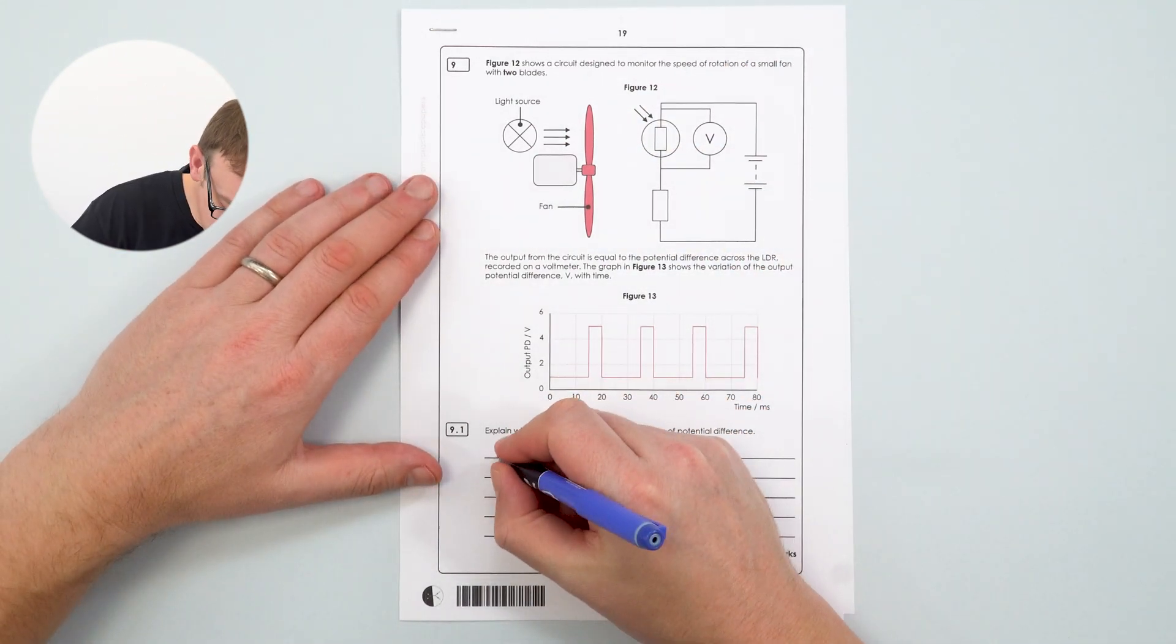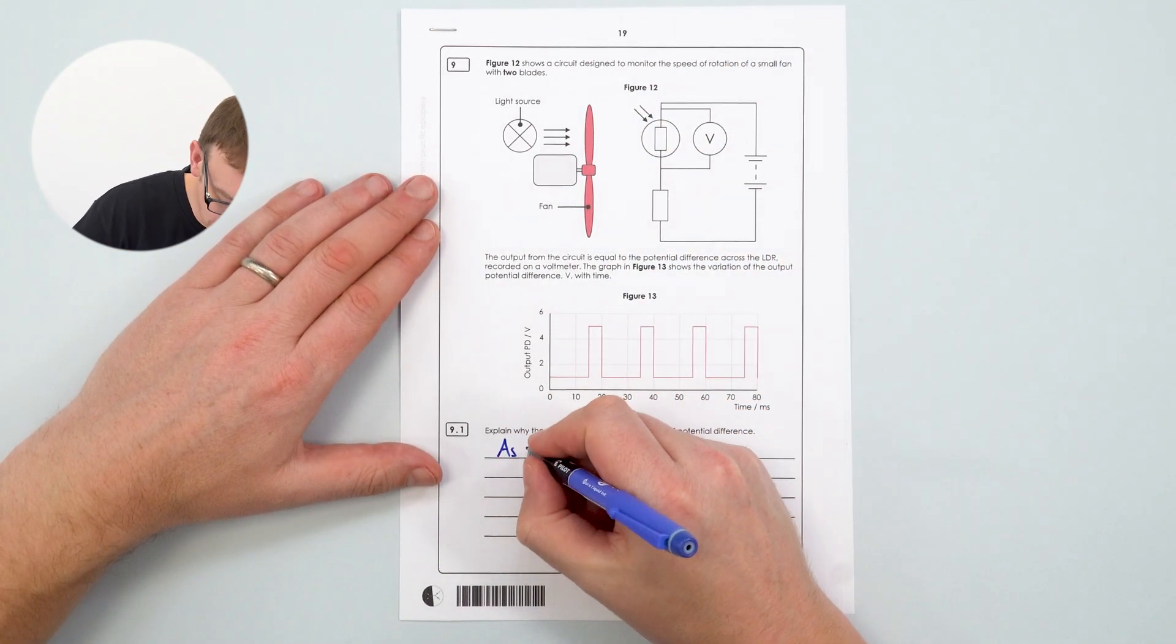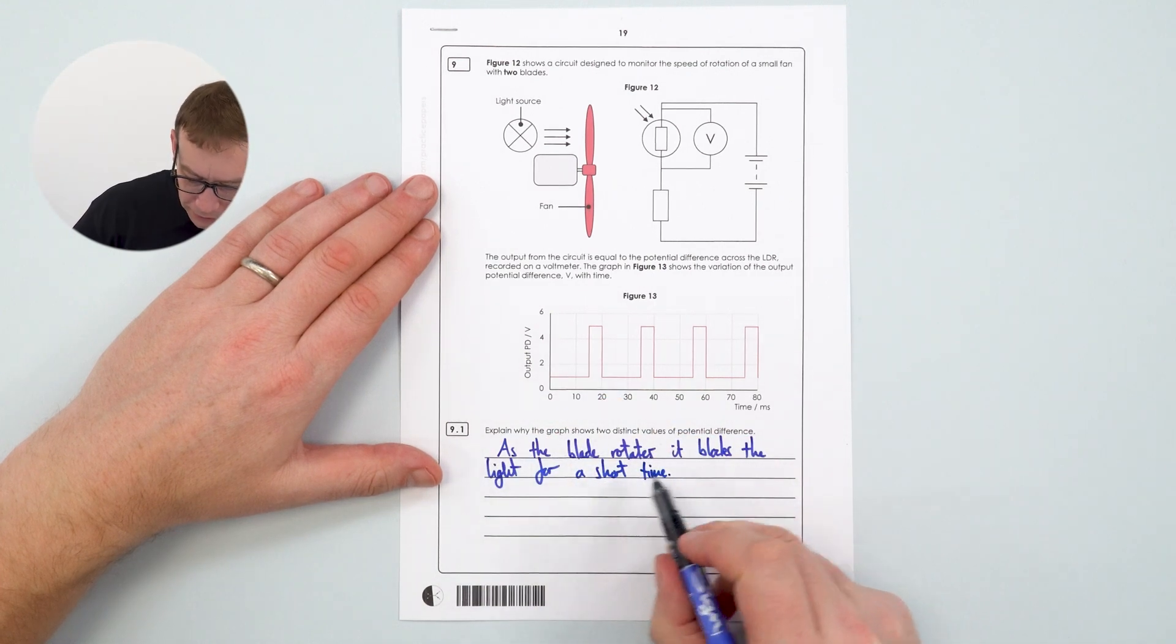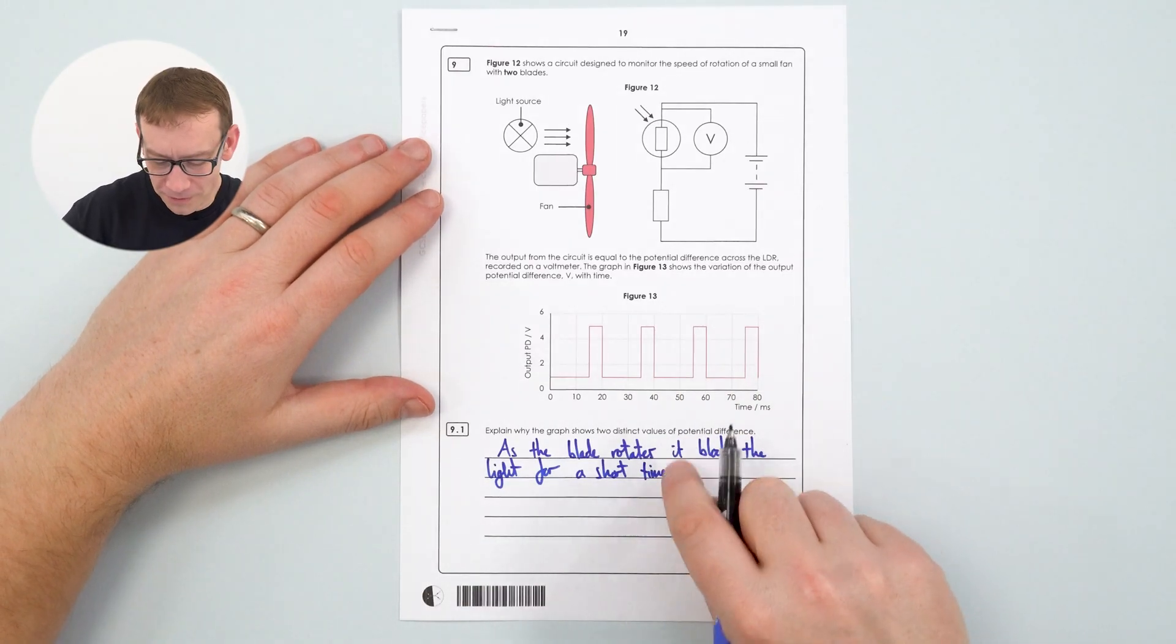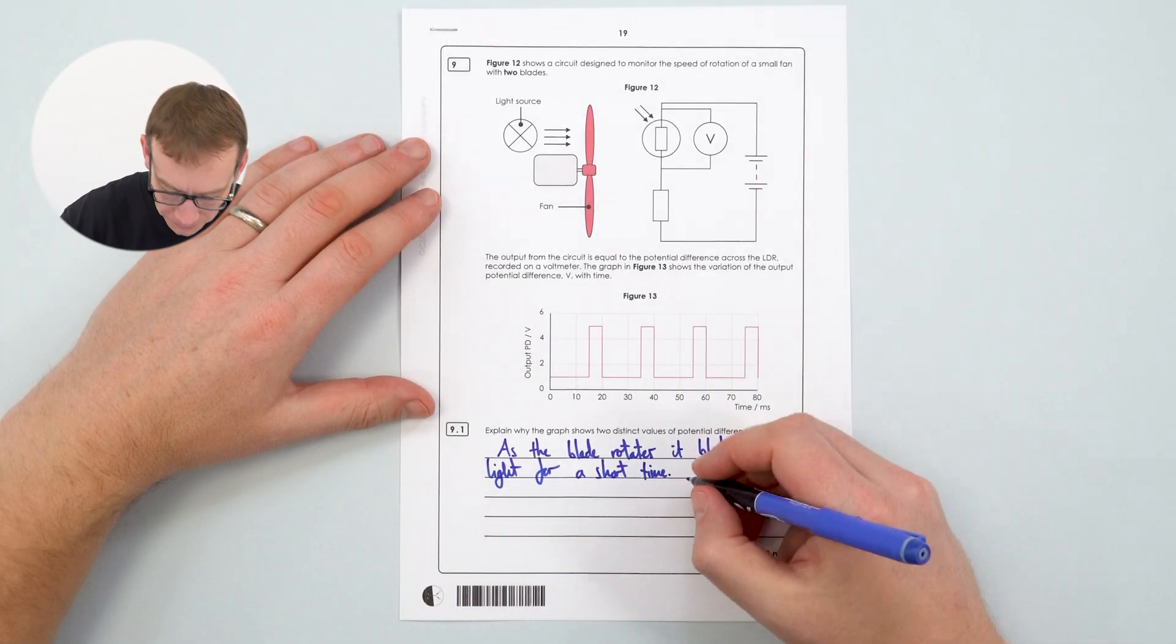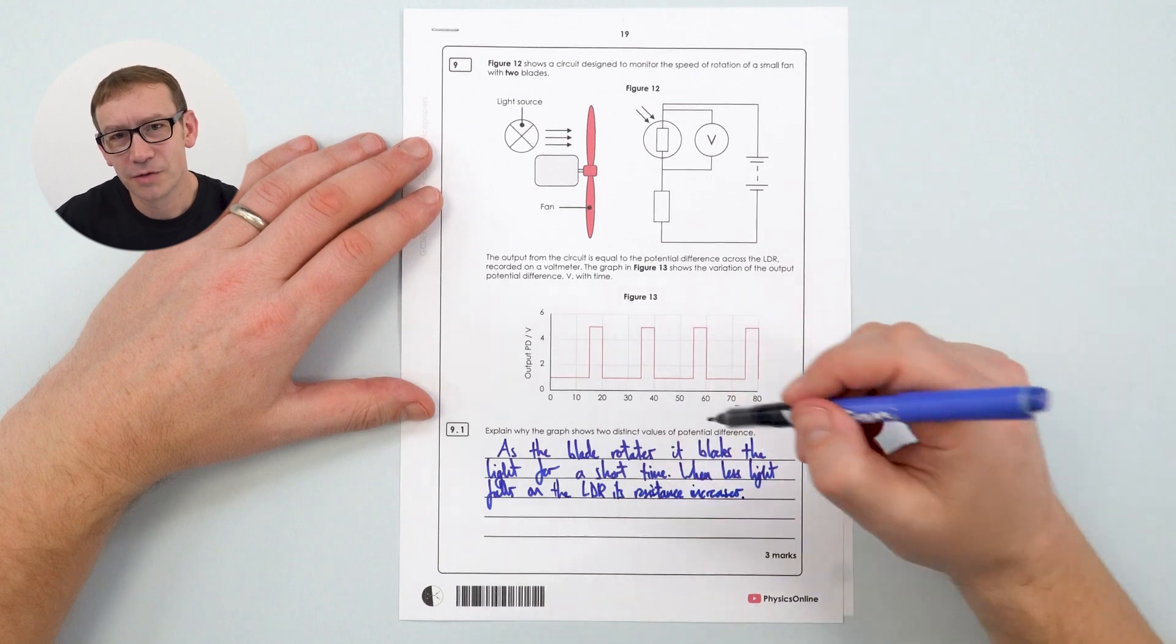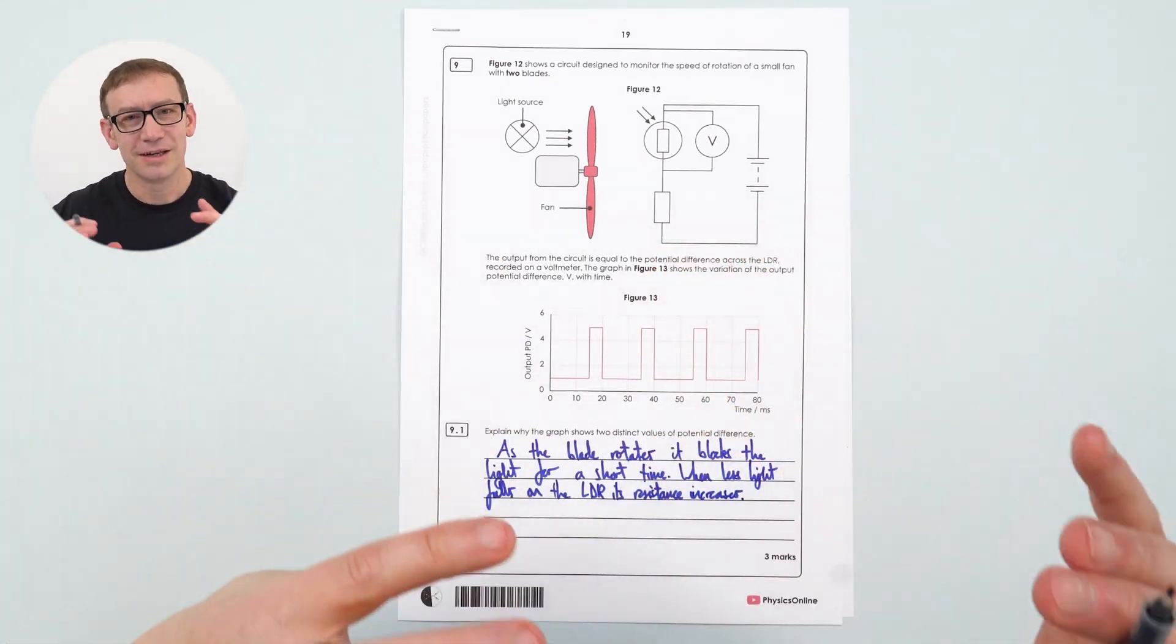So what you could say is that as the fan blade rotates it blocks the light for a short time. So basically stating the obvious. Don't forget that even though you might be working at a really high level you get so many easy marks for stating the obvious in questions. Now of course when less light falls on the LDR then its resistance increases. Again stating the obvious.